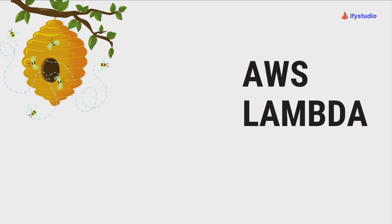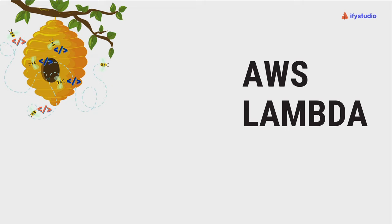Now let's understand what AWS Lambda is. Lambda is like a super efficient worker bee — just like honeybees that work 24/7 on whatever task is given to them. You give Lambda a small piece of code, called a function, and it executes that code only when needed. This saves you a ton of money on servers that would otherwise be sitting idle, and you only pay as you go — you are only charged for the Lambda function when there is a request.